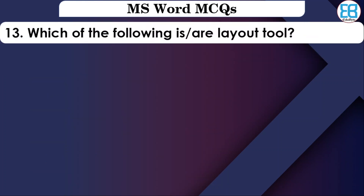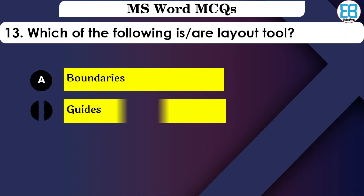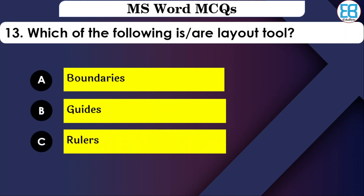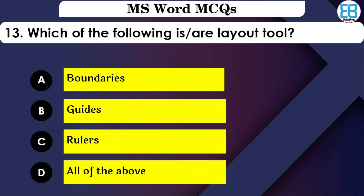Which of the following is available in the Page Layout view? The options are: Boundaries, Guides, Rulers, or All. The correct option is All — Boundaries, Guides, and Rulers are all available in Page Layout.